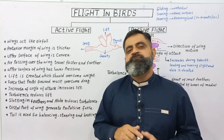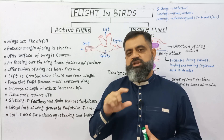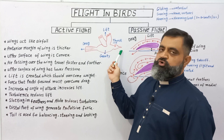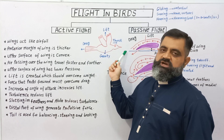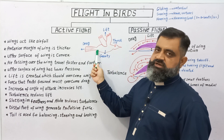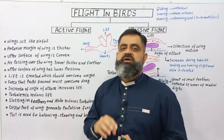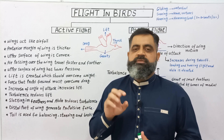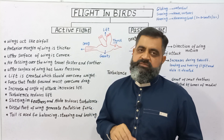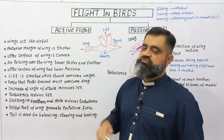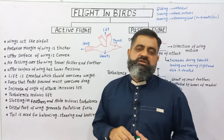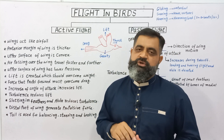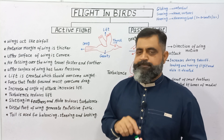Secondly, their body is streamlined. Birds have pointed bodies at both the anterior and posterior ends, which helps them to reduce the friction produced by air. They also have a covering of feathers on their body, which also helps to reduce air friction.